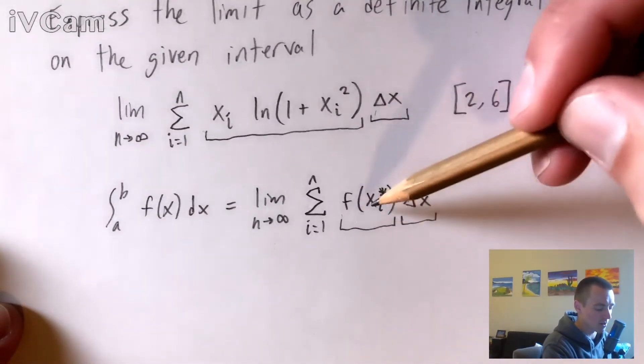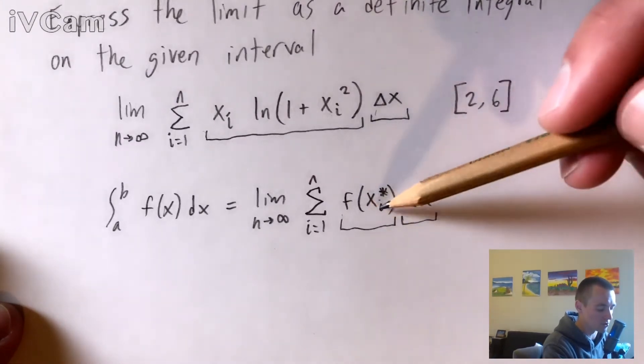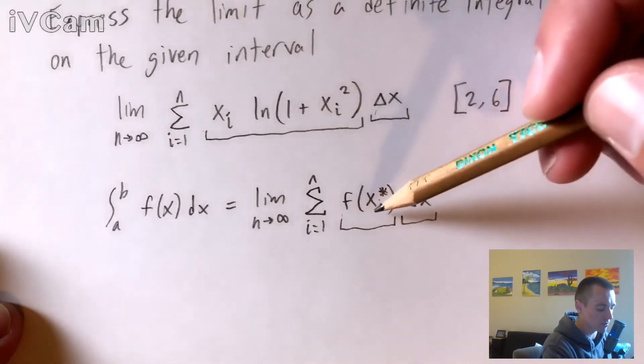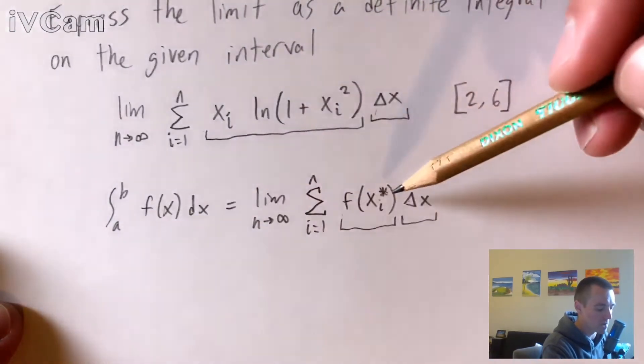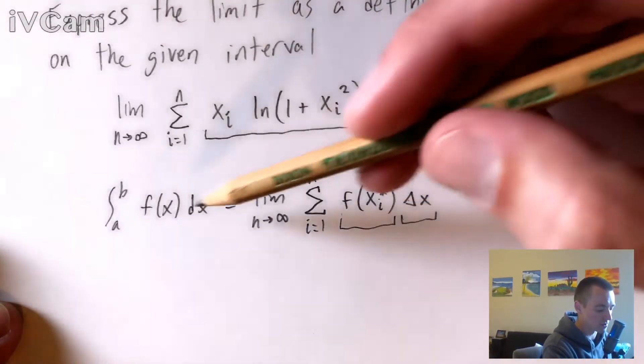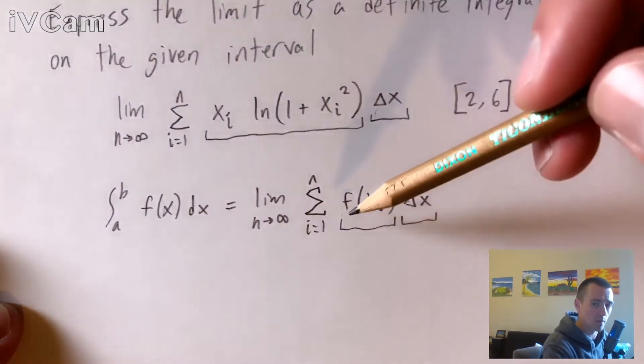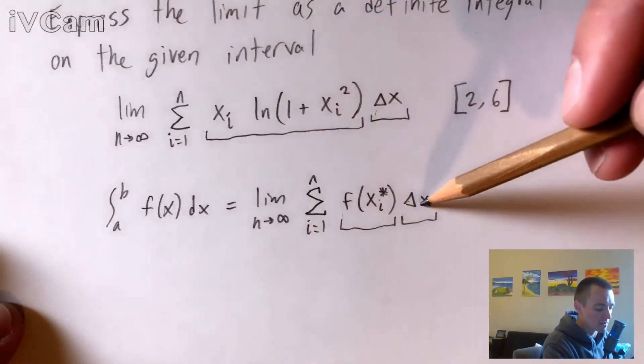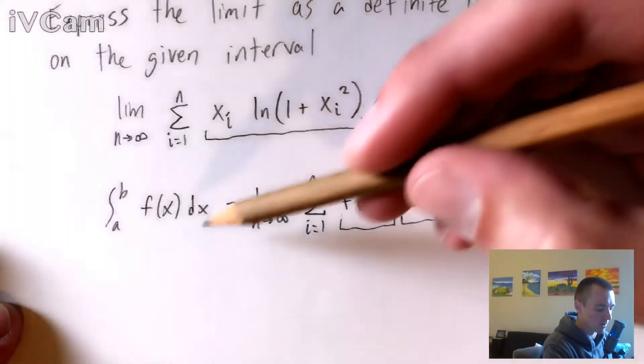So basically, this f of xi star is just saying whatever the function is that we're trying to find the integral of, if we convert this into the integral form, the xi is essentially just going to become x. So we're just going to go from f of xi to f of x. So this delta x is going to correspond with the dx.